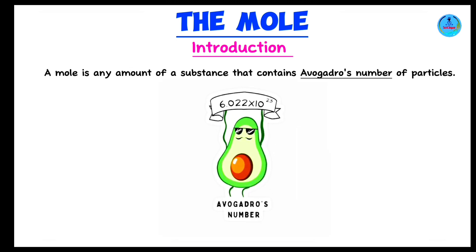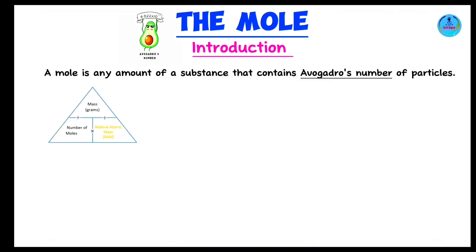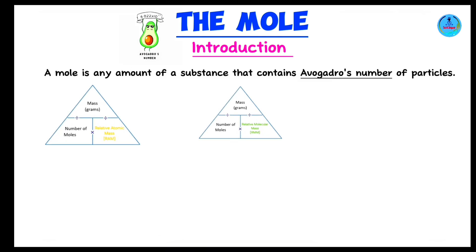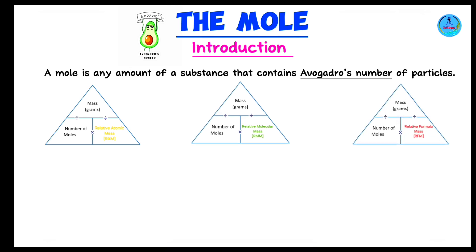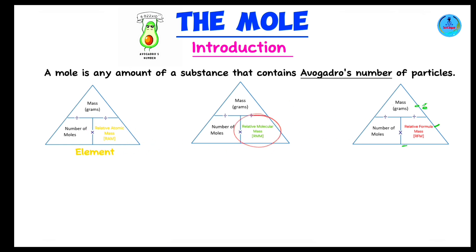The mole of a substance is equivalent to the relative atomic mass, the relative molecular mass, and the relative formula mass. All three of these values are obtained when you take the mass and divide it by the number of moles. The only difference is: relative atomic mass refers to an element, relative molecular mass refers to a molecule, and relative formula mass refers to a compound.